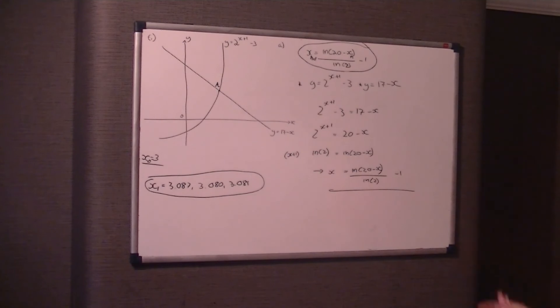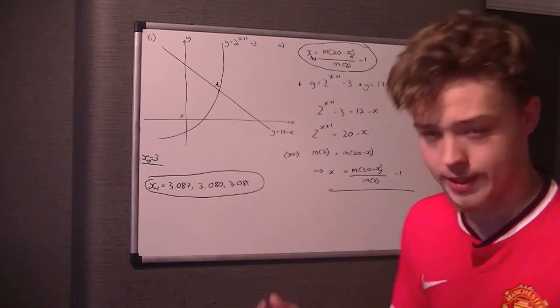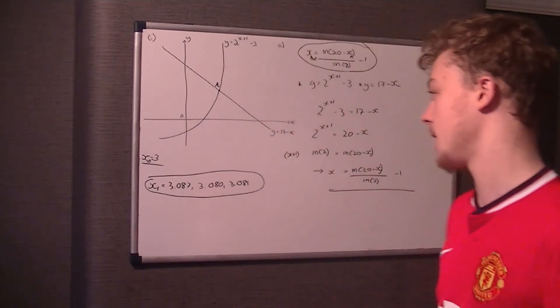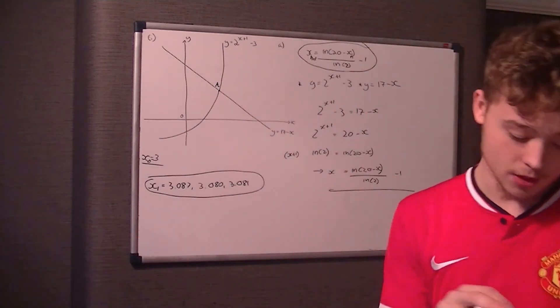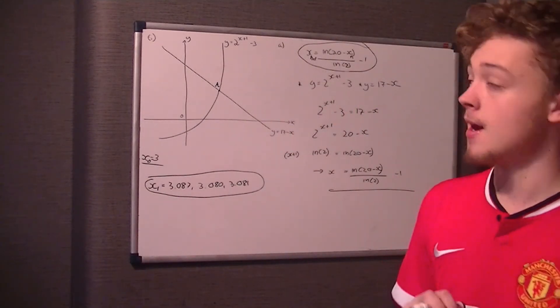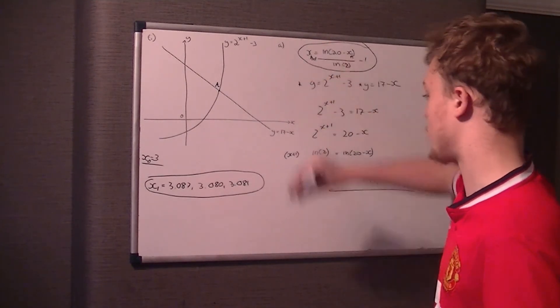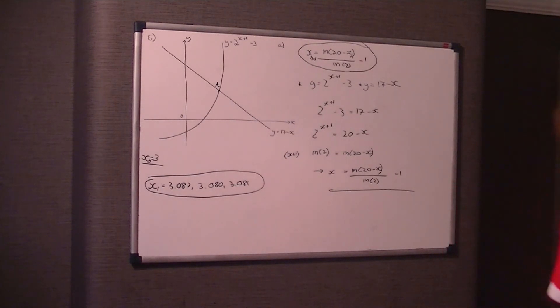So what you'd do then is say, okay, well, using the iteration, it always rounds to 3.1, however many times you press equals. And then what you would do, because this has to deduce the coordinates, is sub 3.1 into either equation. You should get exactly the same answer. And you get 13.9 to one decimal place. So 3.1 and 13.9 to one decimal place is the coordinates of A.